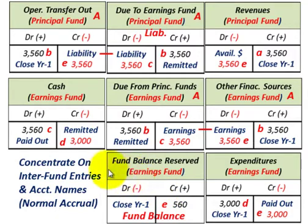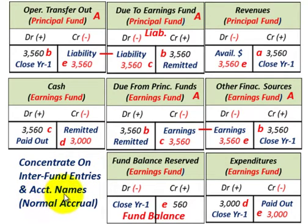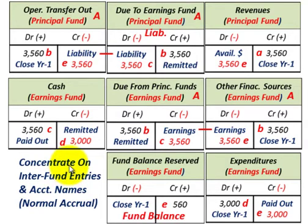We went through quite a number of accounts here. Go back through it and concentrate on your inter-fund entries and account names. We used normal accrual accounting when dealing with these non-expendable trust funds. There are a lot of different titles, but just go through the different entries. That will summarize our topic.